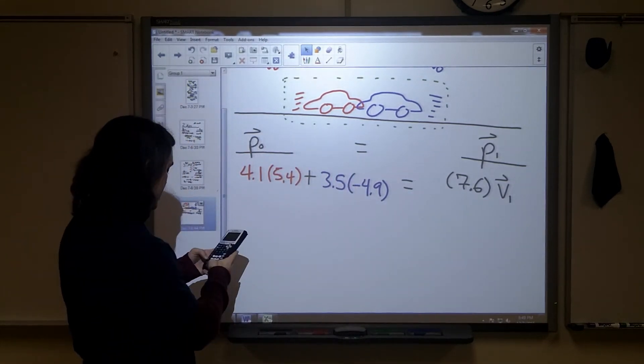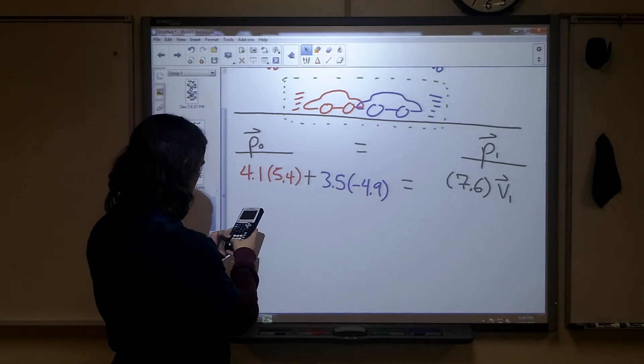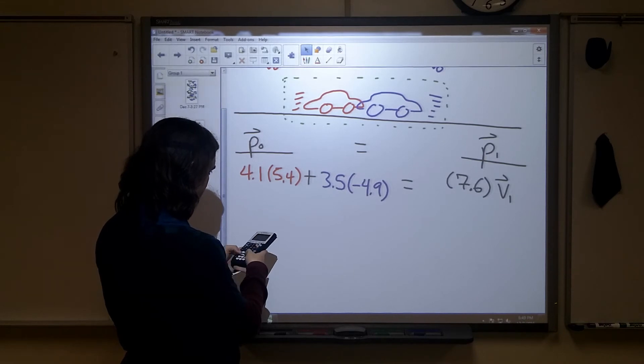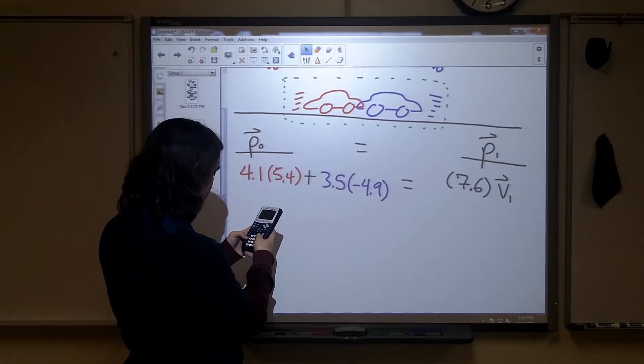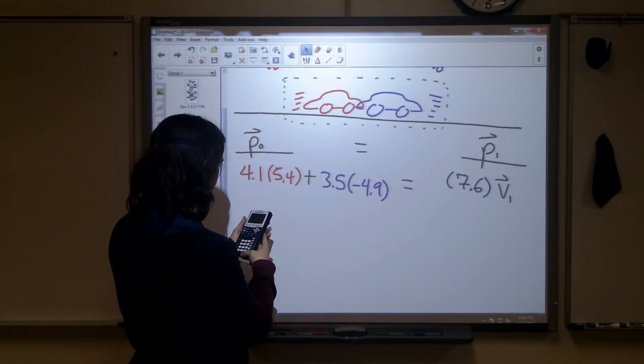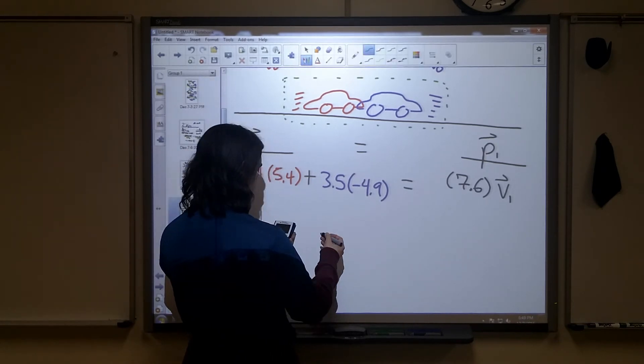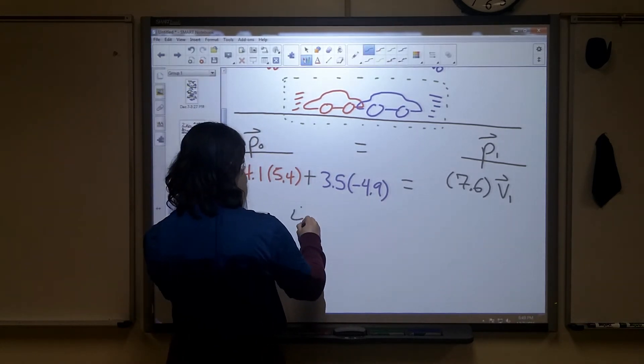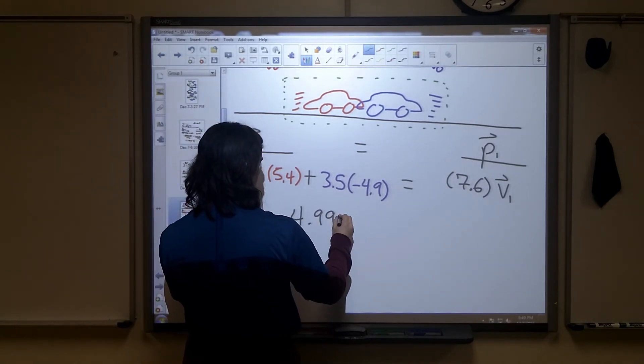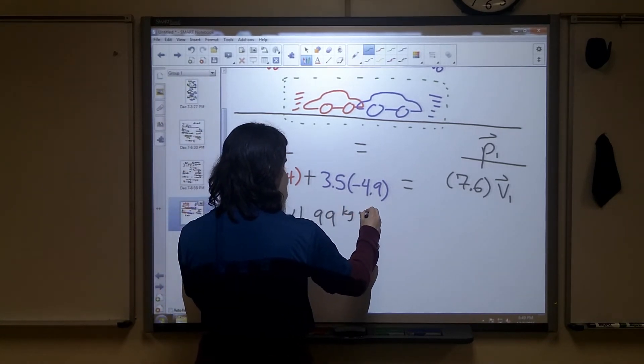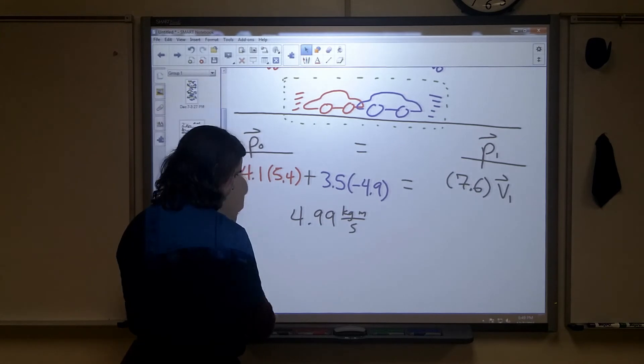Let's find our total initial momentum. So I'm going to do 4.1 times 5.4, and I'm going to add that to negative 4.9, so 3.5 times negative 4.9. Okay, if I have done this correctly, hopefully the order of operations is working fine. I end up with 4.99 kilogram meter per second. I think that's right.